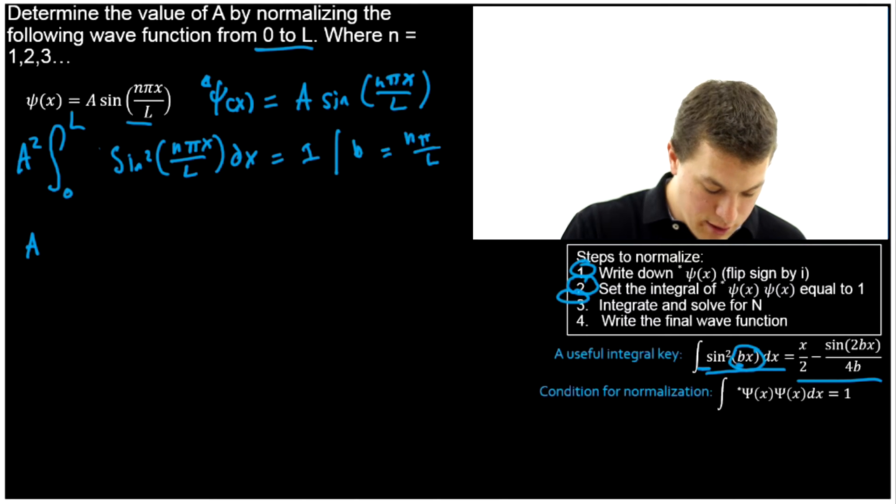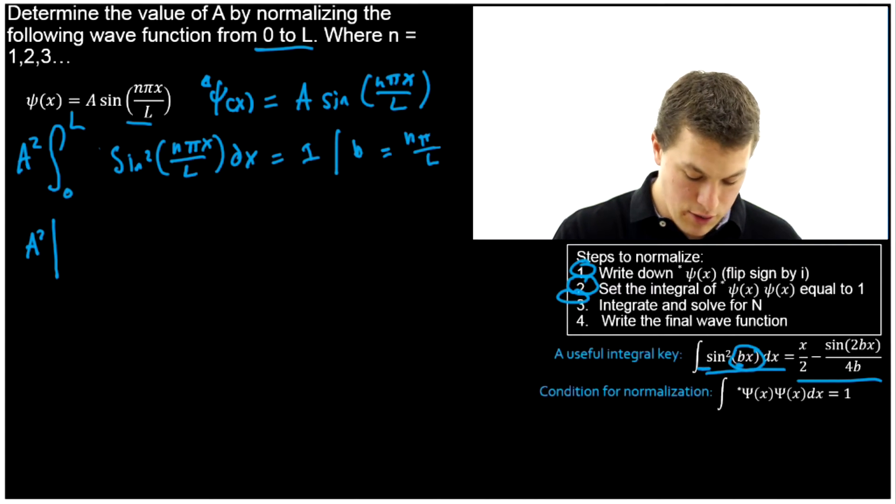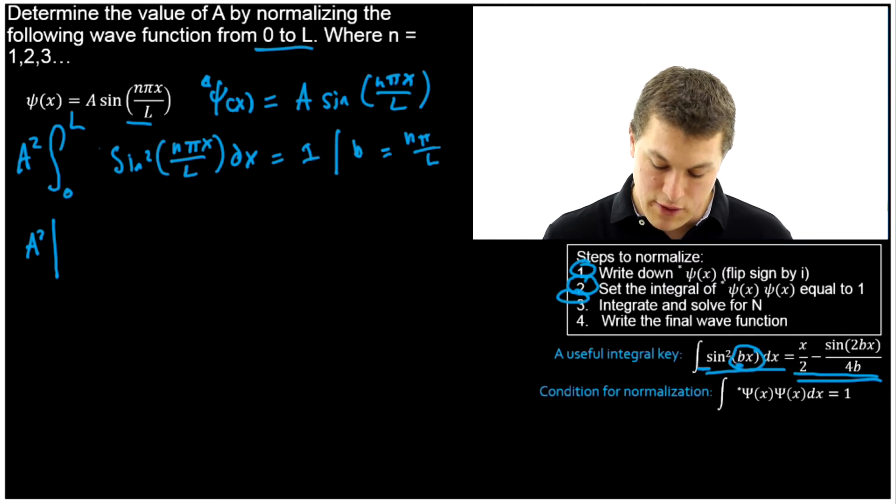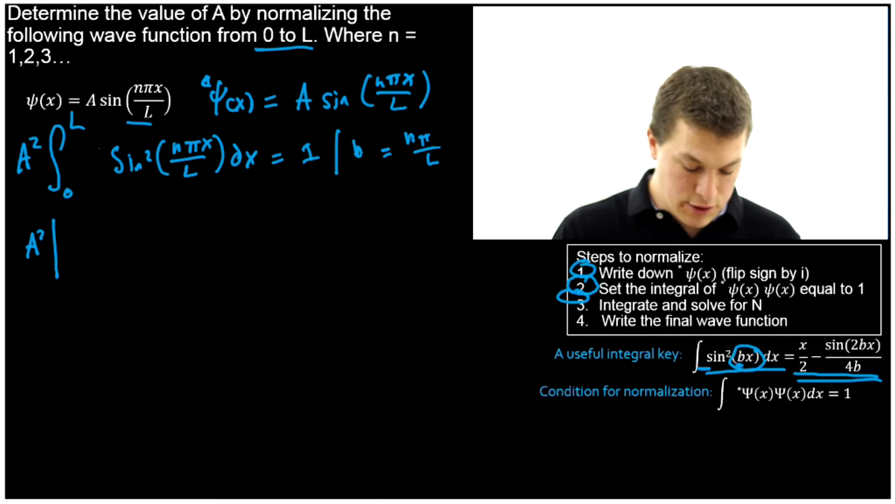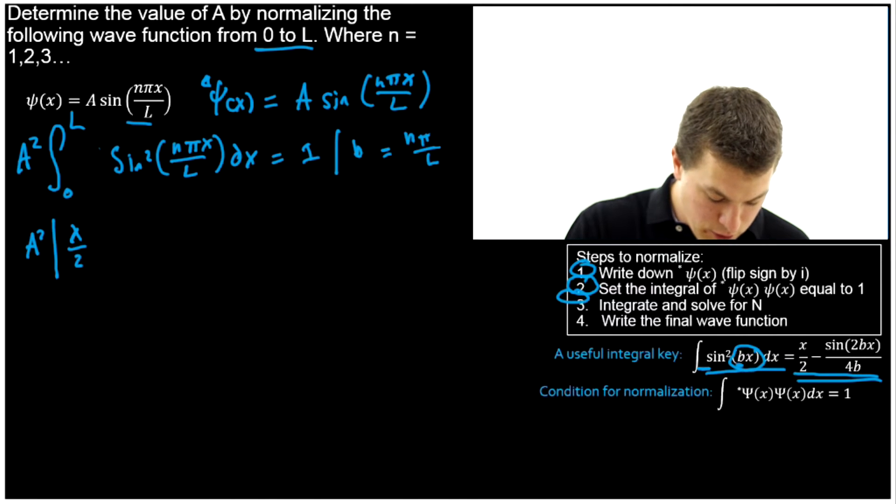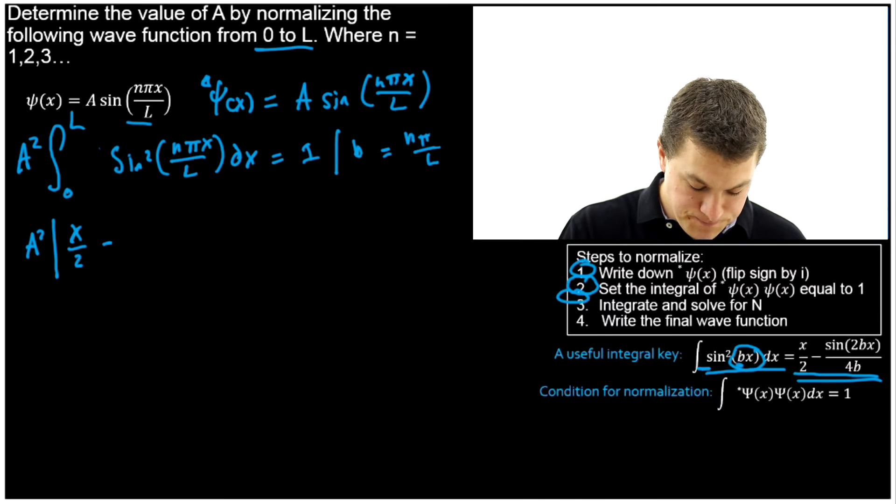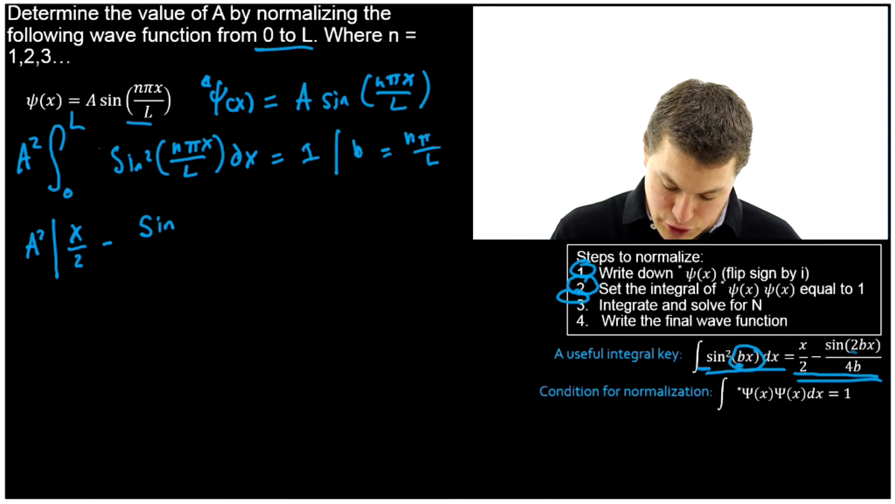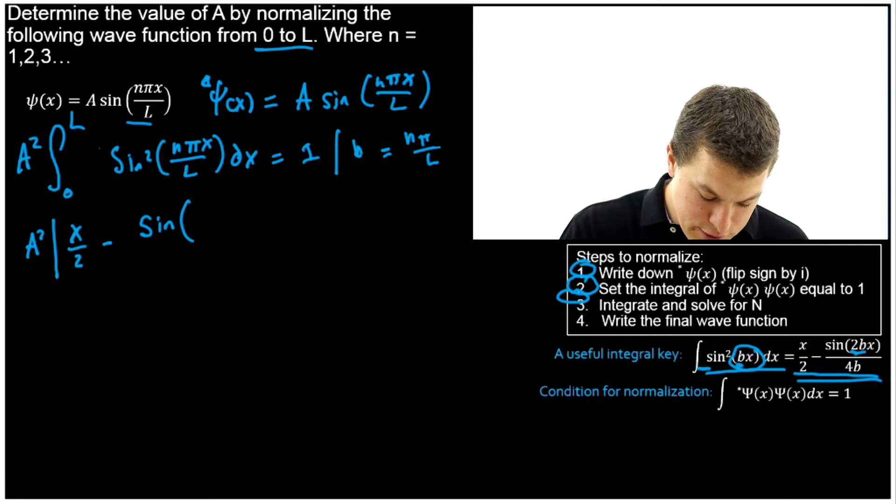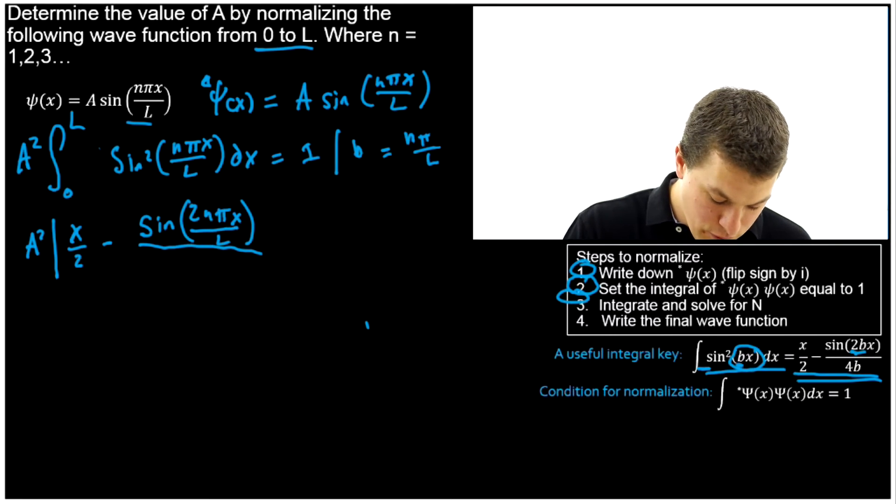So we're going to get A squared, and we're going to evaluate whatever our result is from 0 to L. And now we're going to use the other half of our integral key to write down the result. So we get x/2, that's the first part of our solution, doesn't depend on what our constant was in there. Minus sine, notice that this says 2 times b, so what we're going to get is 2nπ/L, that's 2 times b. And then we're still going to have our x. And that sine is itself over 4b, 4 in this case times nπ/L.